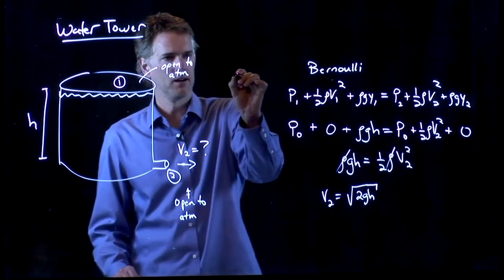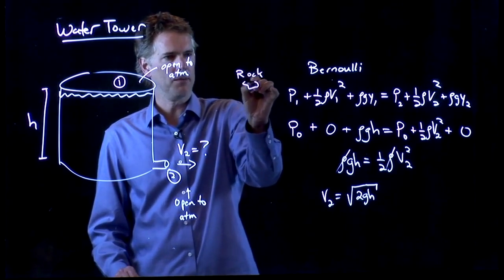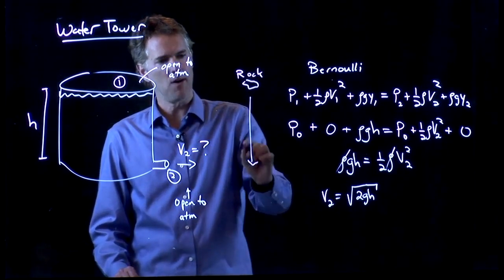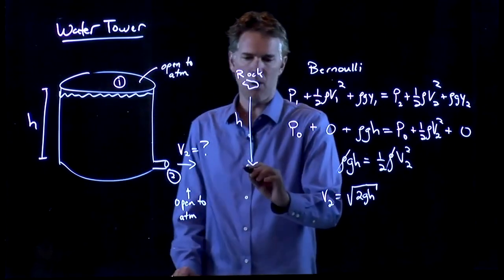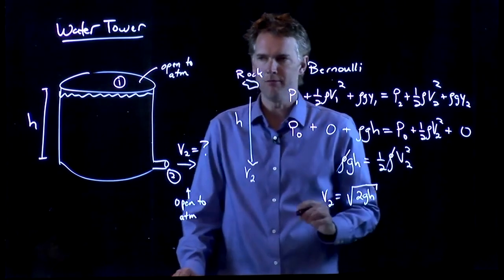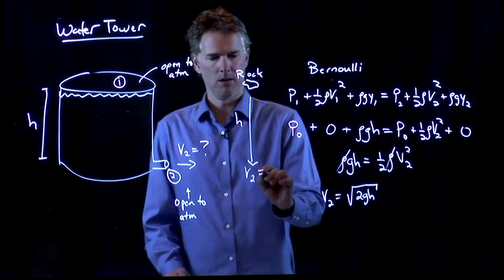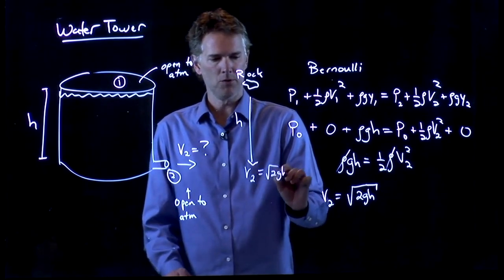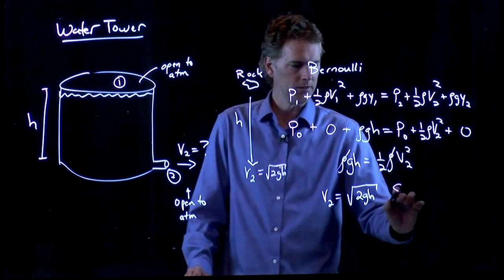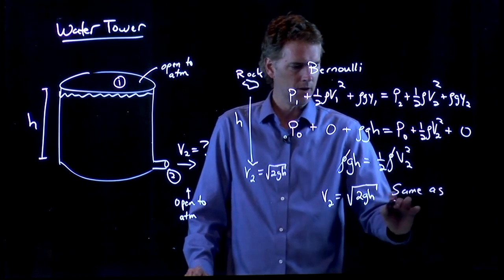If I took a rock and I held it up here at height H and I dropped it, it would be going speed V2 when it hit the ground, which is square root of 2GH. This is exactly the same as free fall.